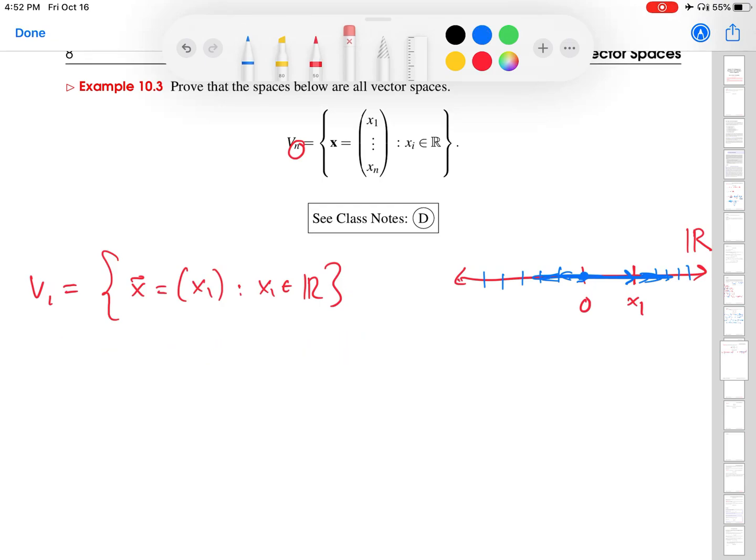We haven't proven that it's a vector space yet, but you should get the hunch that V1 is exactly the same as the space of all real numbers, just interpreted differently. Rather than thinking of it as a set of points on the real line, we're thinking of it as a set of vectors that literally point to those numbers from zero. You should feel like there's no difference between those two representations of the same space.